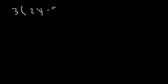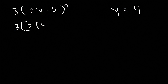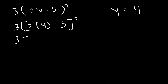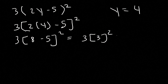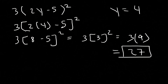Let's try another example: 3 times (2y minus 5) squared, where y equals 4. Feel free to pause the video and work on this example. Replace y with 4. 2 times 4 is 8, and 8 minus 5 is 3. 3 squared, which is 3 times 3, is 9. So we have 3 times 9, which overall is 27. That's the answer.